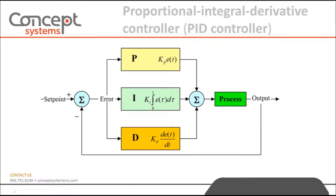A PID controller consists of three parts. First, the proportional term is the amount added to the output based on the current error; the proportional gain is a multiplier. Second, the integral term is the amount added to the output based on the sum of the previous errors. Third, the derivative term is the amount subtracted from the output based on the rate of change of the current error.